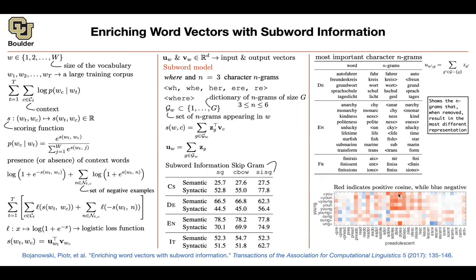A student asks: when finding the three most important subwords by removing one from the summation, which original vector do you compare against? The answer is the vector that included all of the n-gram components — not just the word itself. You remove one subword at a time and compute cosine similarity with the full n-gram representation. The full word is excluded from the candidates because it would trivially be the most important — you're interested in the subwords specifically.